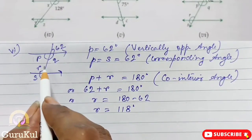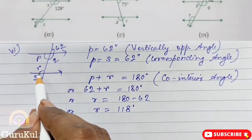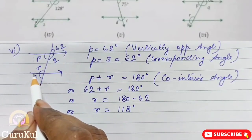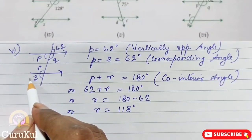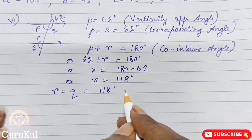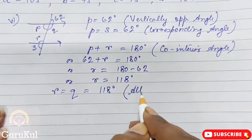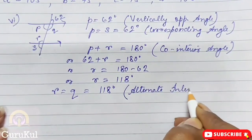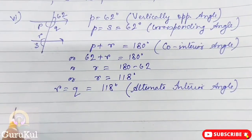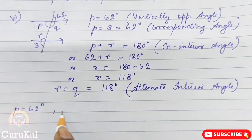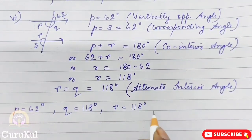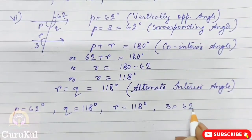Now that we have R, we can find Q. R is equal to Q — reason: alternate interior angle (Z-form). So Q = 118 degrees. Final answers: P = 62 degrees, Q = 118 degrees, R = 118 degrees, S = 62 degrees.